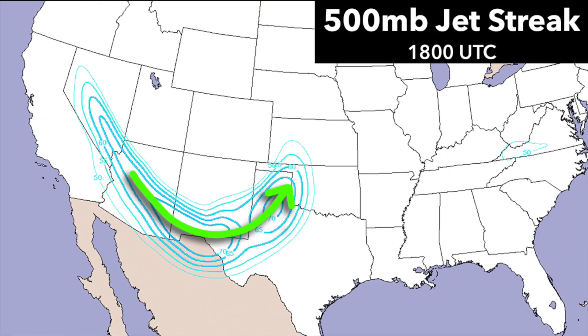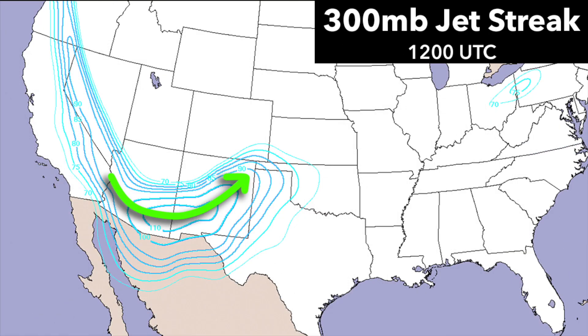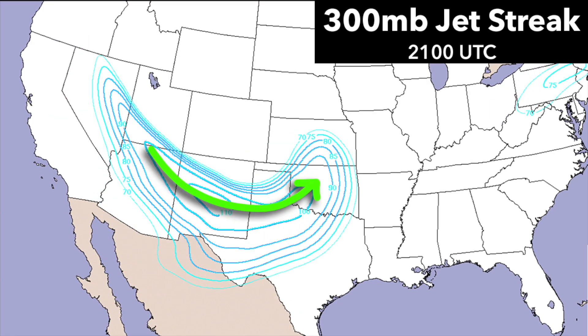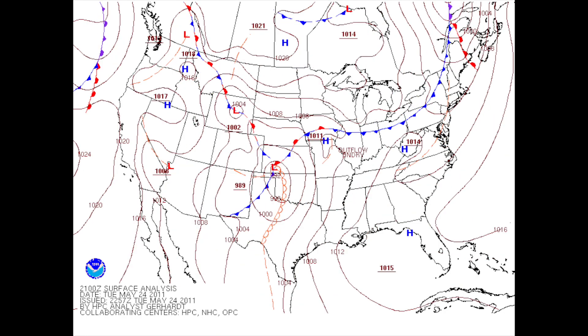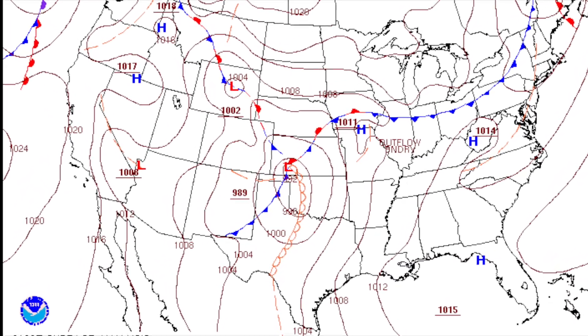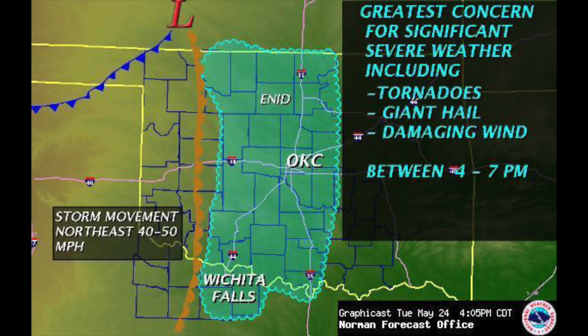As the day progressed, a 70 to 80-knot 500-millibar jet would move into western north Texas and a 110-knot 300-millibar jet would move into the high plains of Texas. As these jet maxima approached, the surface low would deepen to about 992 millibars across northwestern Oklahoma and southwestern Kansas. The very high instability and wind shear lined up perfectly for a high risk of severe weather, with very dry air and gusty winds following behind the dry line.